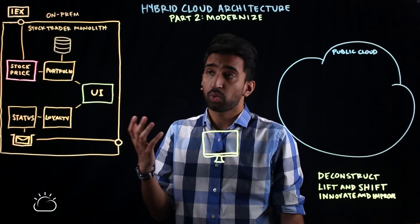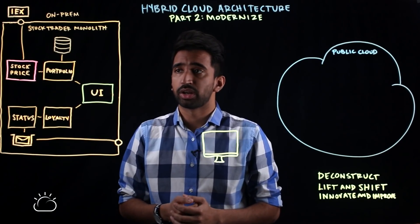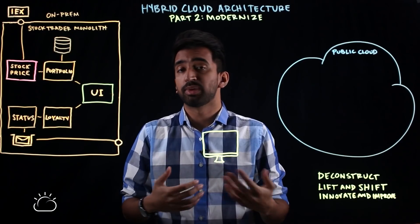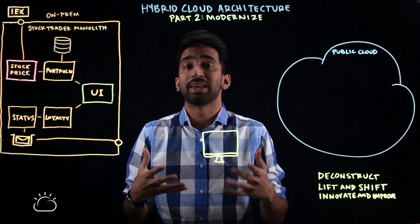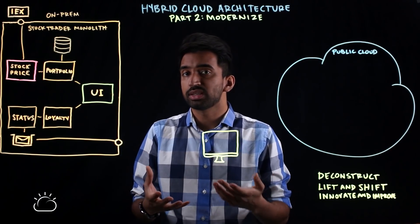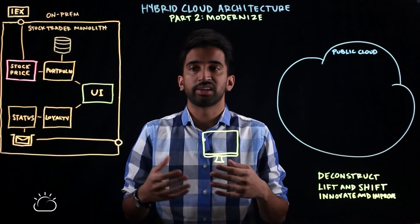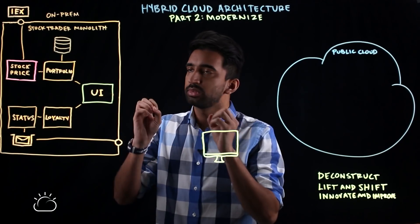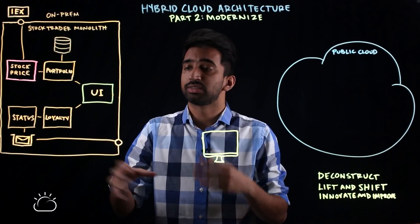This architecture has worked quite well for the fictional company StockTrader. They've seen growth, expanded, and potentially become an international company. What they've noticed is that certain users are seeing increased latency. So the architects decided it's time to get rid of the monolith and start deconstructing it to take advantage of the public cloud.